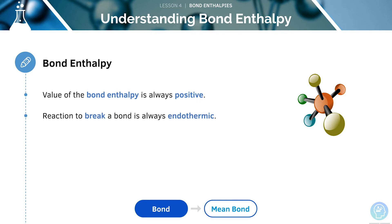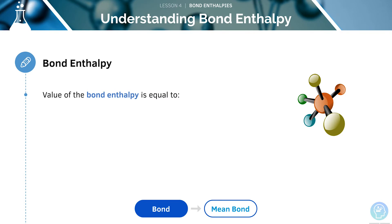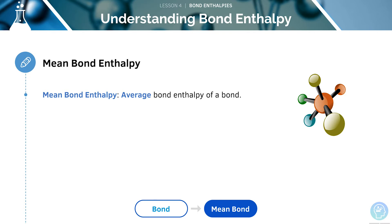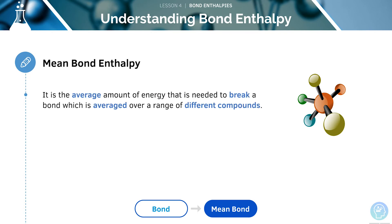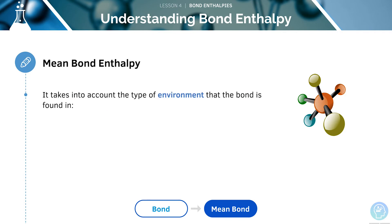The reaction to break a bond is always going to be endothermic. The value of the bond enthalpy is also equal to the energy required to form one mole of bonds. The mean bond enthalpy is the average bond enthalpy of the bond, derived from the full range of molecules that contain this specific bond. It takes into account the type of environment that the bond is found in, as this affects the amount of energy required to break it.